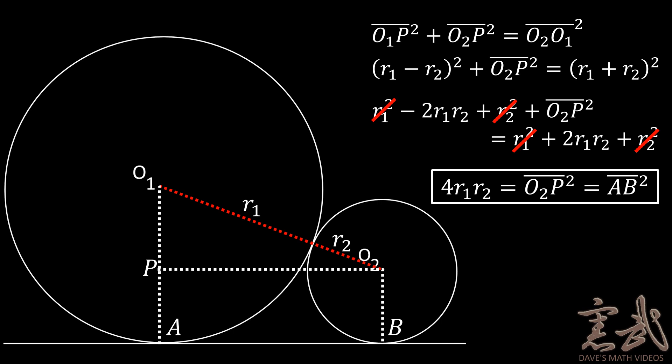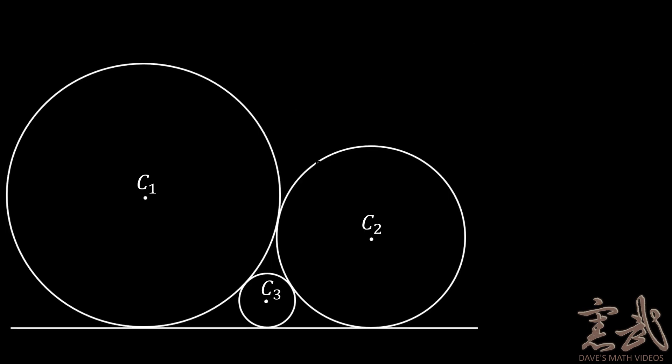We will now use this information to solve the case with three circles. And here is the case with three circles rather than two. First, we will make some annotations on our diagram here in order to make it a little bit easier for us to see relationships between the circles.